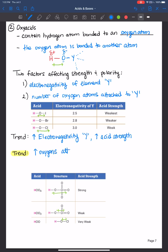Let's write that down. In summary, as we increase the oxygens, the number of oxygens attached to Y, we also increase the acid strength. So these are the two trends we need to consider when we are ranking the relative acid strength of oxyacids.